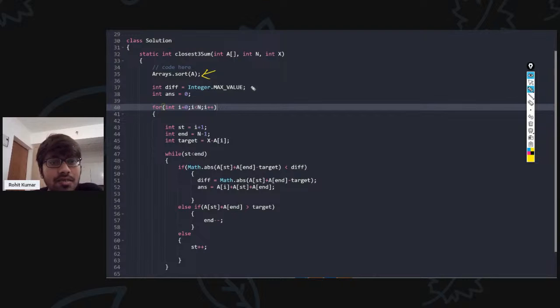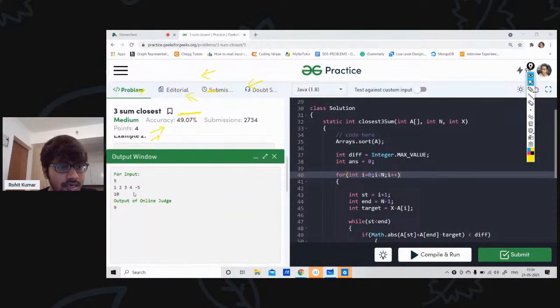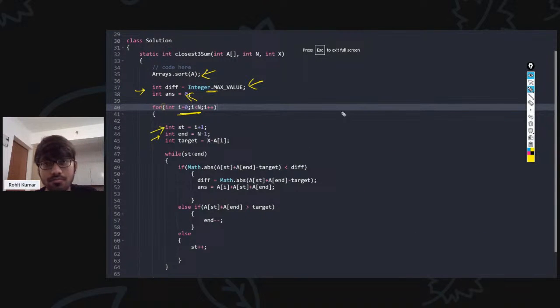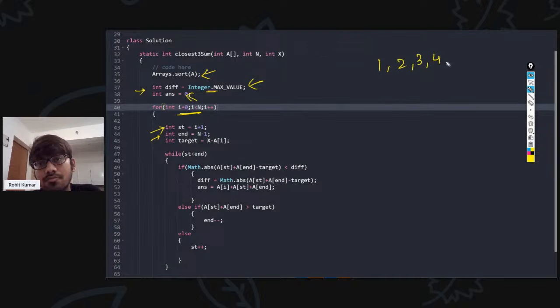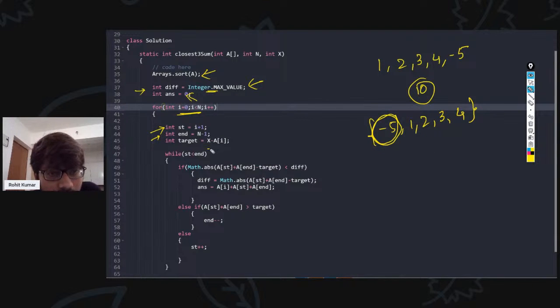So over here, as you could see, I have taken target and all those things. We have initially sorted the array. Taken difference, difference initialized with answer equals to zero, running from i equals to zero, start equals to i plus one, end equals to n minus one. Why? Because if you look at it, let me take one sample input. Let's take this only: 1, 2, 3, 4, minus 5. We want 10. So after sorting this becomes minus 5, 1, 2, 3, 4. You have taken this and you are somewhere calculating your target x minus minus 5. Your start is plus one. You are searching something closer to 15.